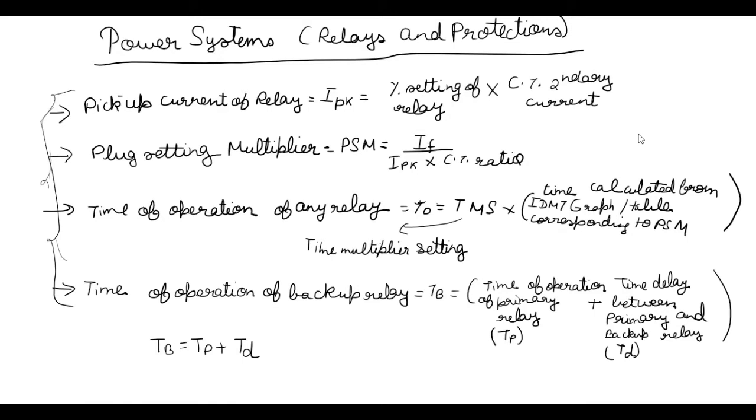So let's start with pickup current of relay, IPK, which is equal to percentage setting of relay into CT secondary current. So usually I think what is CT secondary current or what we have to do. Everything is there and I am going to answer everything in the question. And now the PSM, plug setting multiplier, which is IF upon IPK into CT ratio, where IF is fault current.